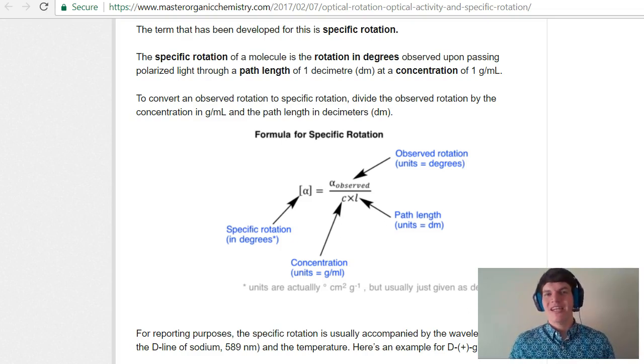Now if we want to understand to what degree that chiral compound will rotate plane polarized light in a certain situation, we're going to want to use that value to calculate the observed rotation, which is the exact rotation you would expect under those conditions. And to figure that out, we use this equation.